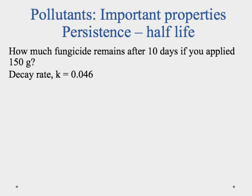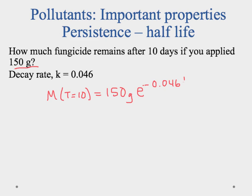You can do the same thing whether you're looking at percentages or mass. Now instead of starting at 100%, we say we started with 150 grams. So m at time t equals 10 days equals the initial mass — 150 grams — times e to the negative 0.046 per day times 10 days. If we do the math, we end up with about 95 grams remaining after 10 days.